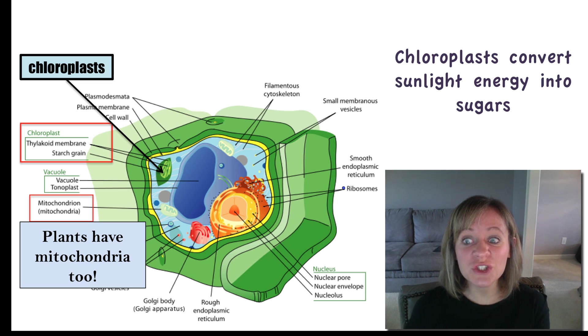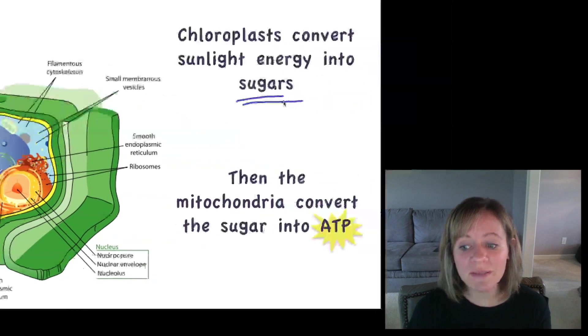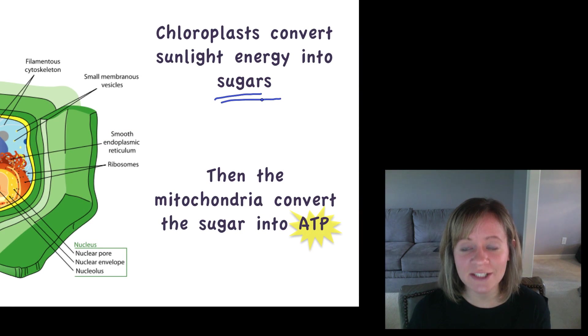But then the cell has to do something with those sugars. It can't use those sugars to move and to do other cellular functions. It's just sugar. So it uses the mitochondria to convert that sugar into ATP.